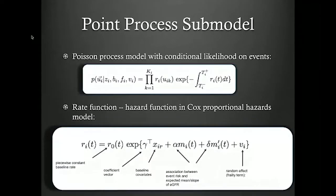We can tie the two together by saying the rate function for having some kind of adverse event like a heart attack or stroke depends on the mean and slope of the kidney functioning of that individual patient — that's what the terms m_i(t) and m'_i(t) represent: the mean and slopes of the Gaussian process function.